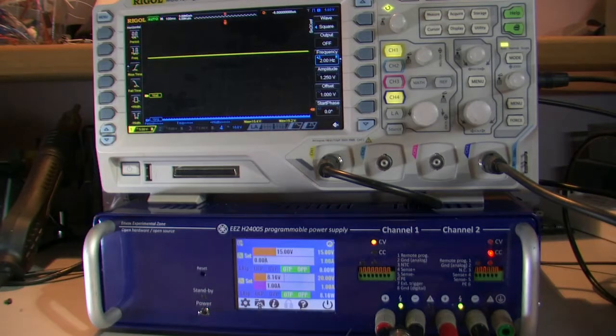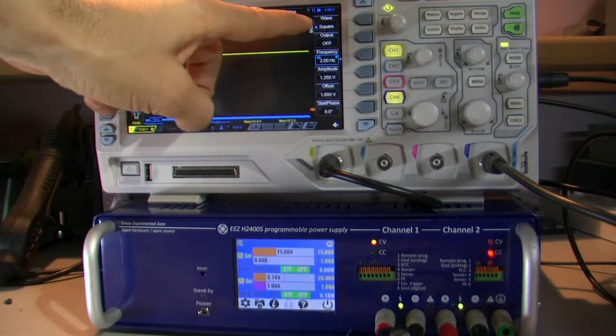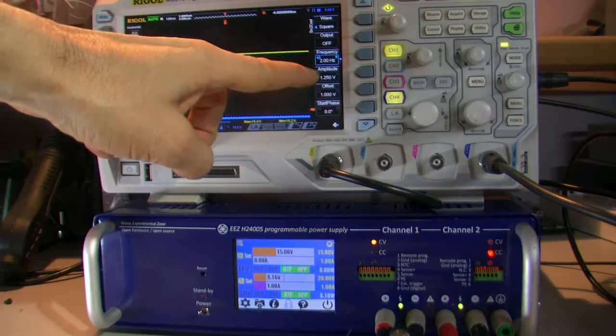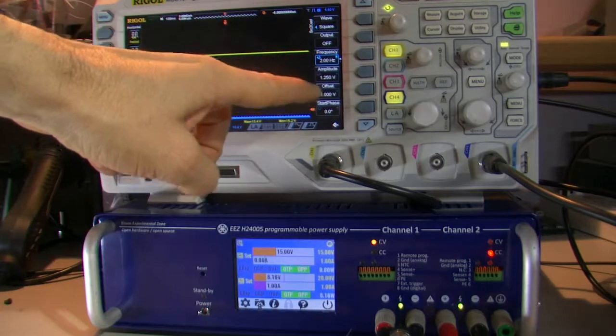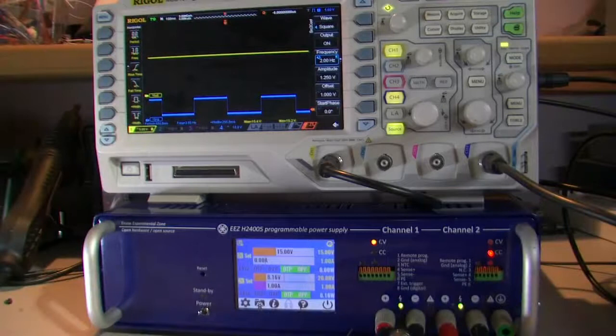We'll use the signal generator from the oscilloscope as the external source, which is set to a square wave at 2 Hz. The amplitude is 1.25 volts with some offset, and when it is switched on, it looks like this.